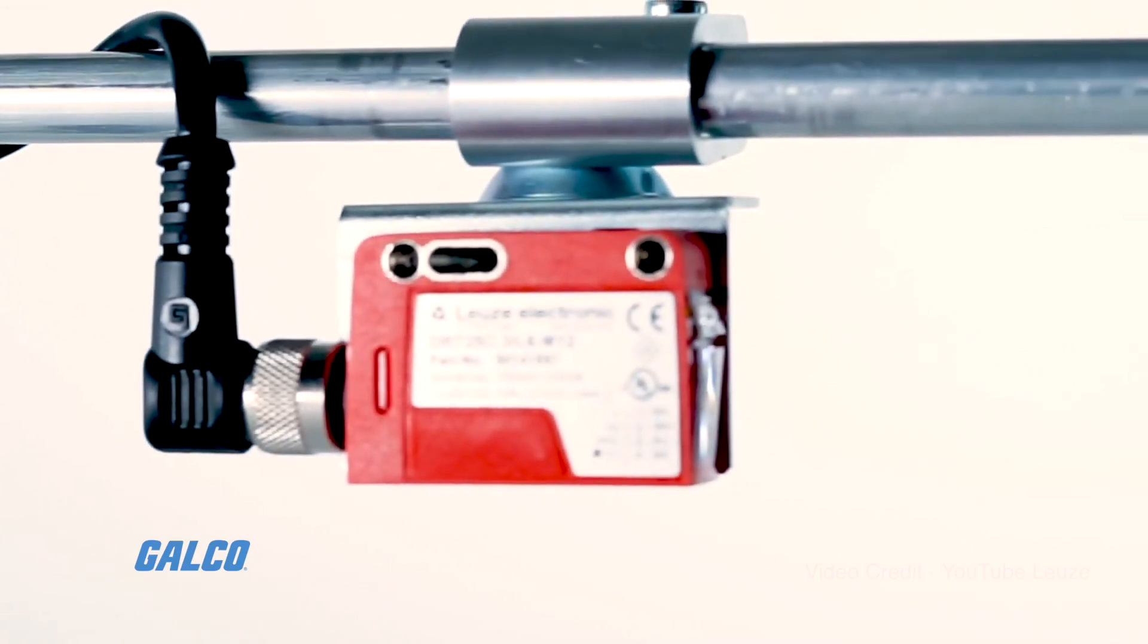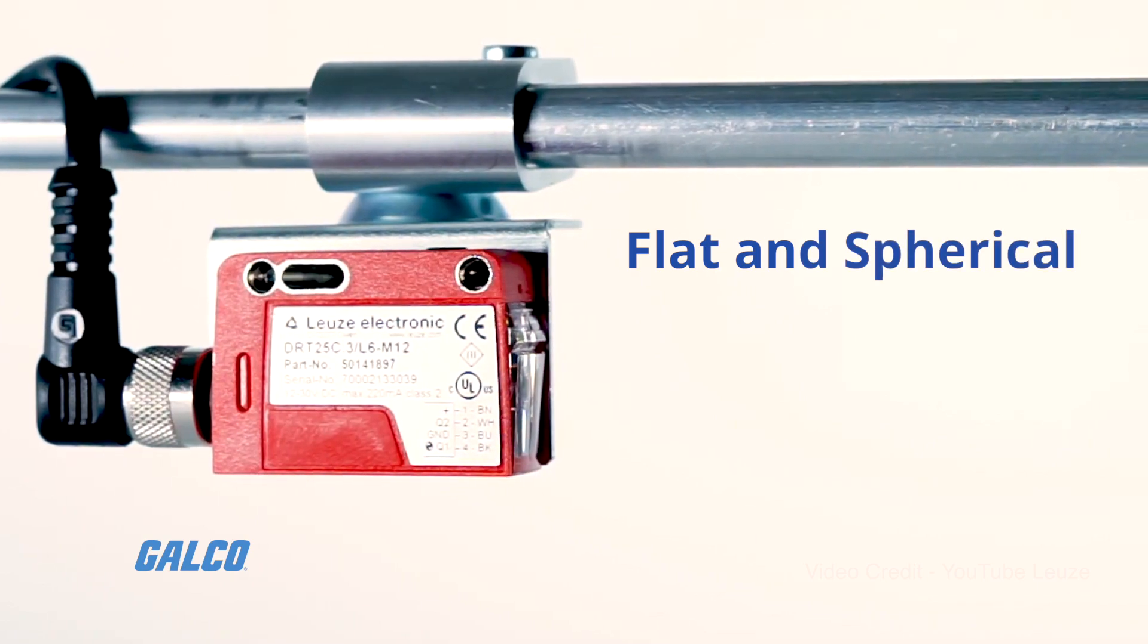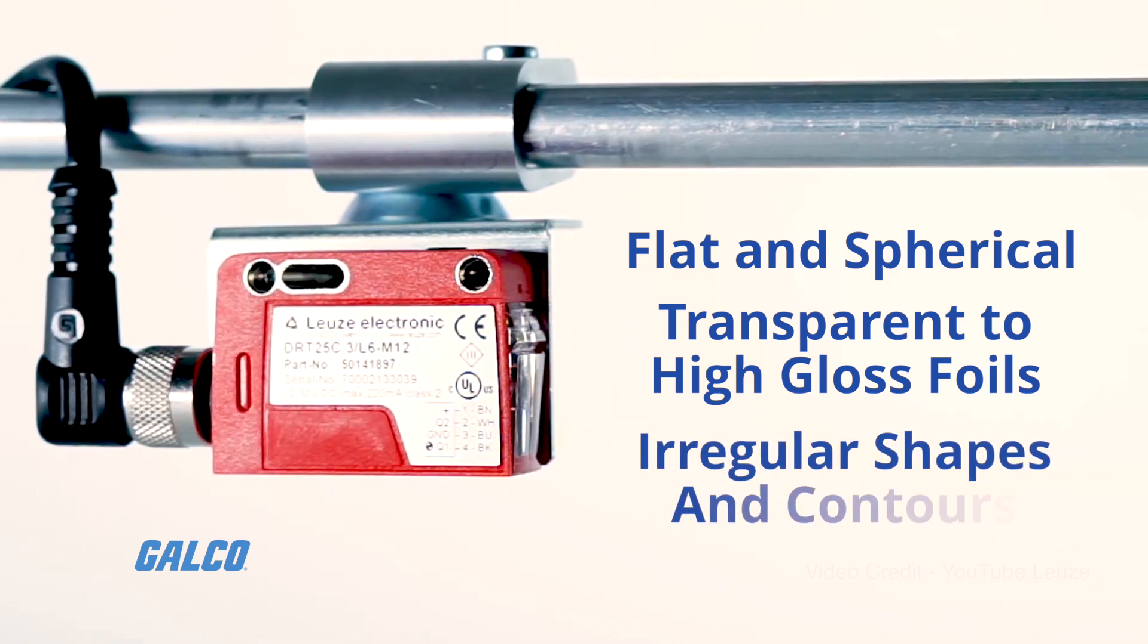CAT reliably recognizes flat and spherical products, transparent to high gloss foils, as well as irregular shapes and contours.